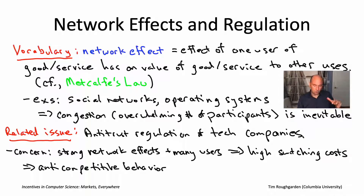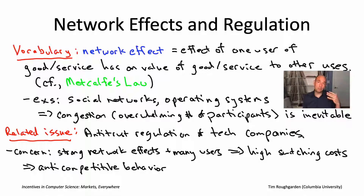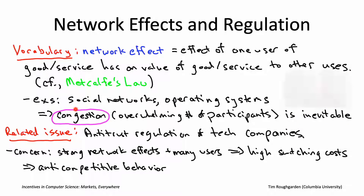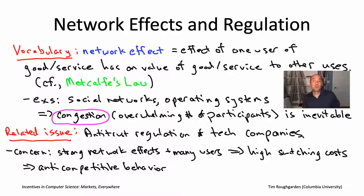The main takeaway from this slide is that in the types of systems we're talking about, there are strong network effects, so you're going to see platforms with tons and tons of users — that is, markets that are challenged by congestion. Next, I want to drill down on some of the options available to you if you have a market with congestion, about how to ensure that it continues to function smoothly.